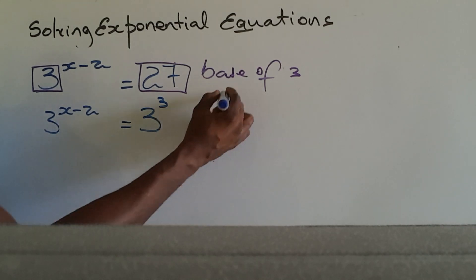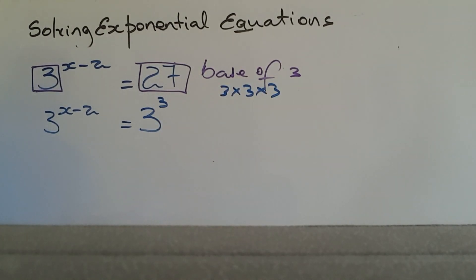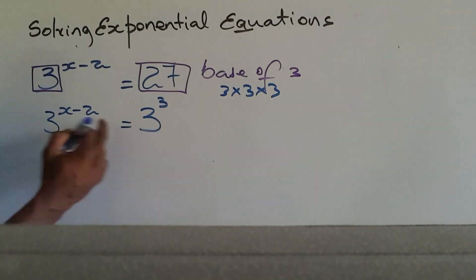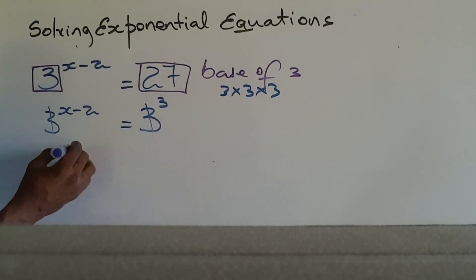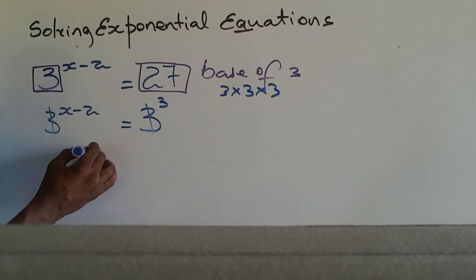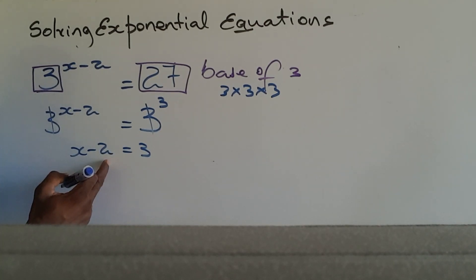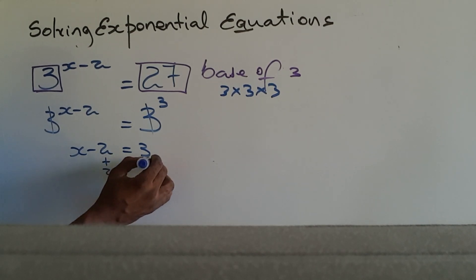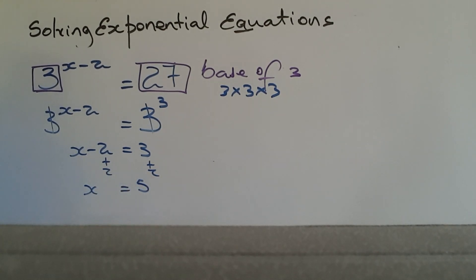Because 3 times 3 times 3 is 27. Since we now have the same base on either side, the bases cancel, leaving X minus 2 equals 3. We then solve the regular equation by adding 2 to both sides, giving X equals 5.